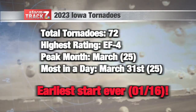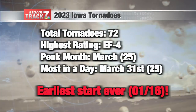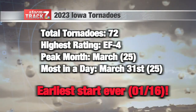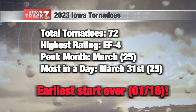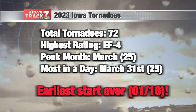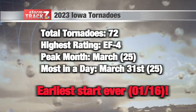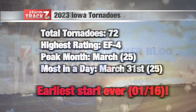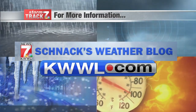Just a few more tidbits: total tornadoes last year were 72. The highest rating was EF4 in Keokuk. The peak month was March — 25 of them occurred during that severe weather outbreak on March 31st. One other interesting factor: the earliest start ever, with a couple of tornadoes on January 16th. Quite the earliest start. Pretty typical tornado season last year overall. We'll see what this year holds — we're already off to a start with the tornadoes that occurred last night.